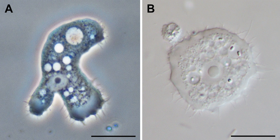Discosia is a class of Amoebozoa, consisting of naked amoebae with a flattened, discoid body shape. Members of the group do not produce tubular or subcylindrical pseudopodia, like amoebae of the class Tubulinea.